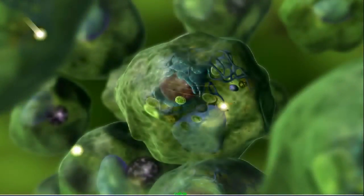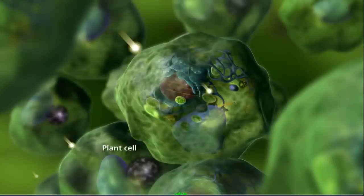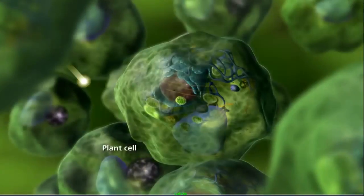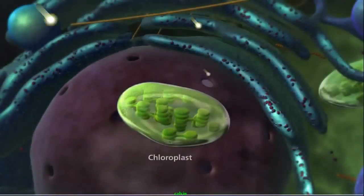Photosynthetic organisms, also known as photoautotrophs, carry out the chemical reactions of photosynthesis within plant cells in specialized structures known as chloroplasts.